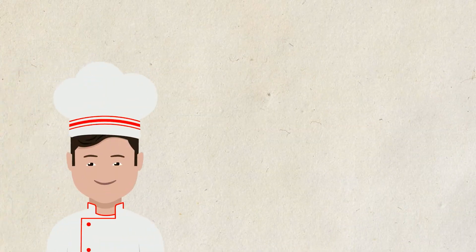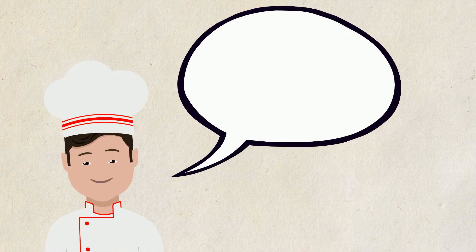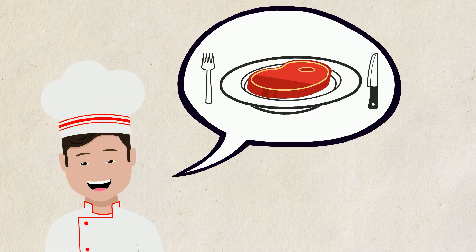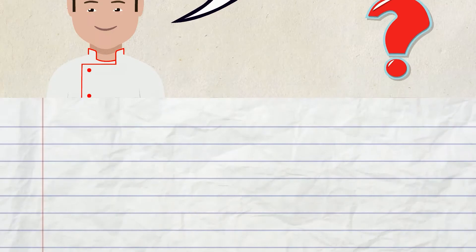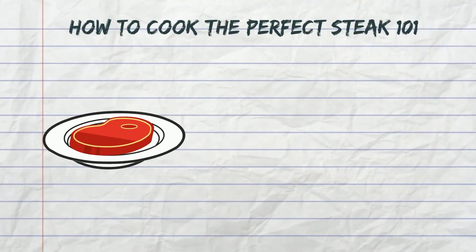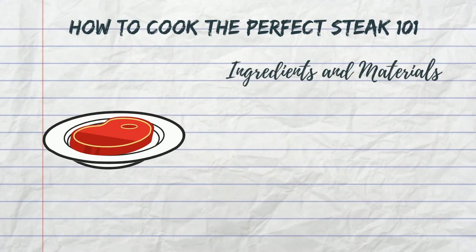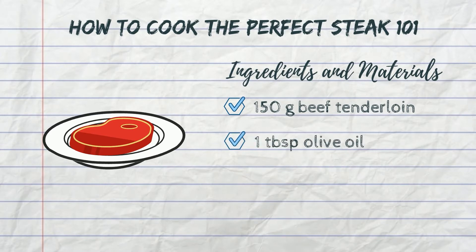Let's say that you are a chef and you are supposed to teach someone how to cook the perfect steak. How will you do it? You will most likely begin your instructions by listing down all the ingredients you need, like the kind of meat, how much oil, or what cooking materials do we need.